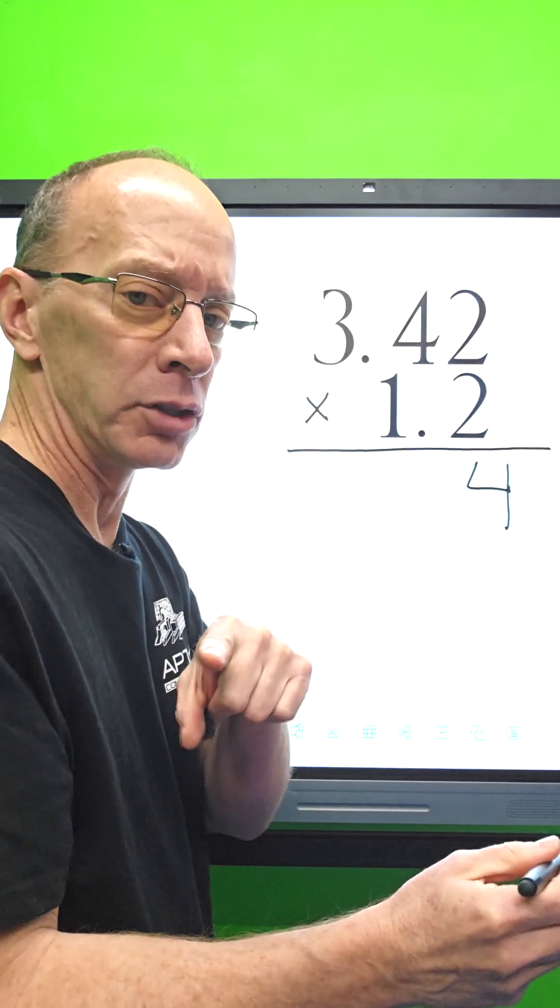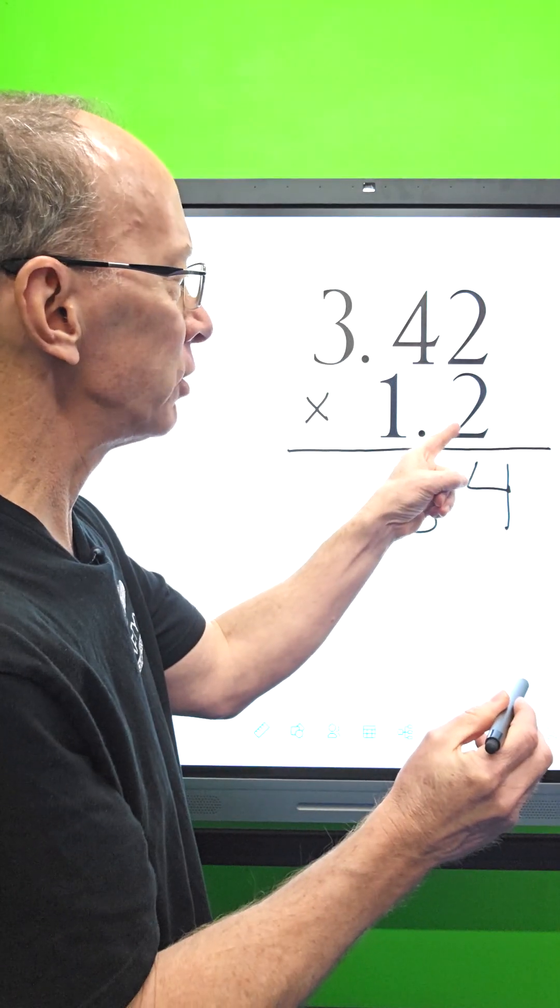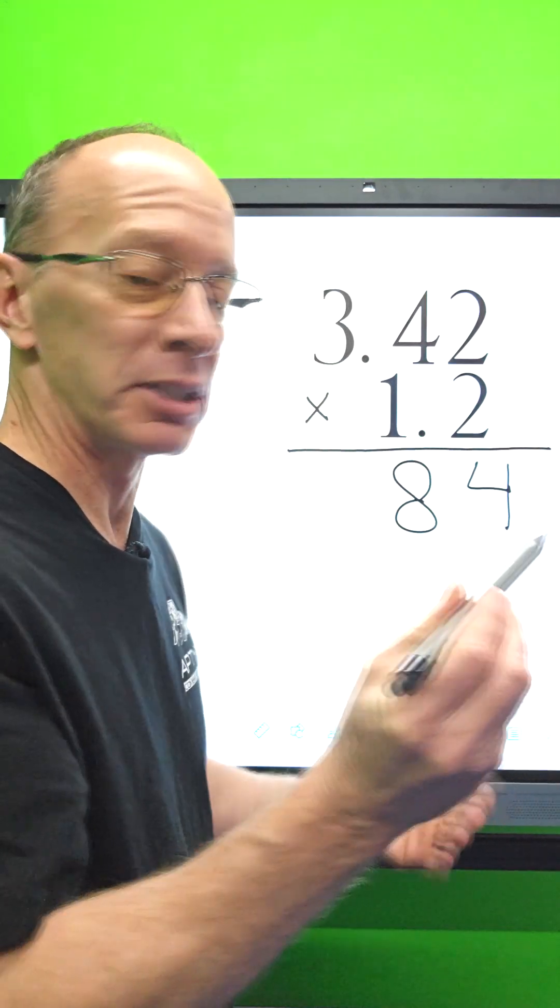Two times three is six, pick up sticks, so I'm gonna put the six right here. Now I begin with the one, so I take one times two is two, so I put two right here.